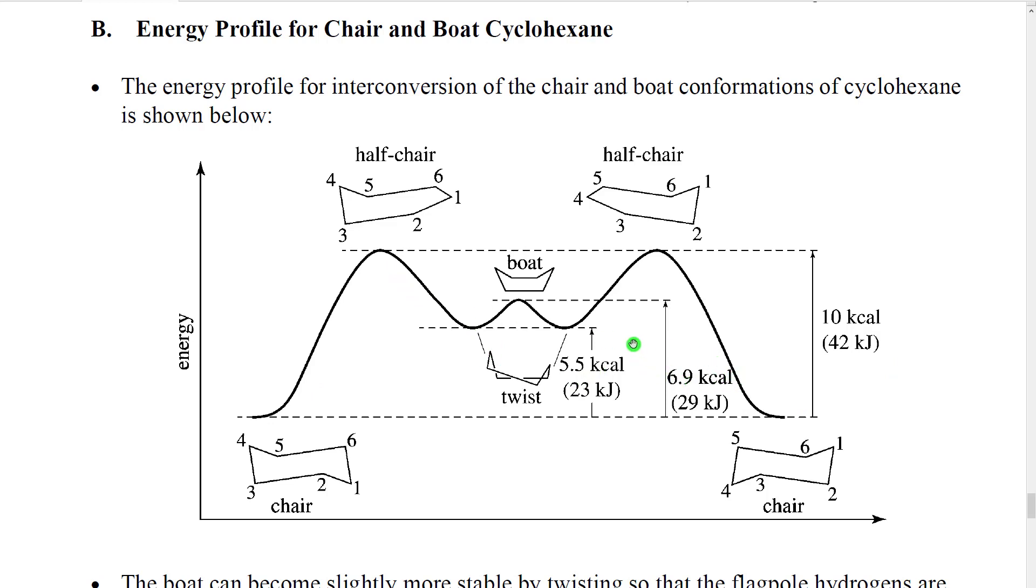You can see our numbers here. You can see that, for example, even the twist boat is five and a half kilocalories above the chair. That would make it disfavored by a factor of about 10,000 to one.